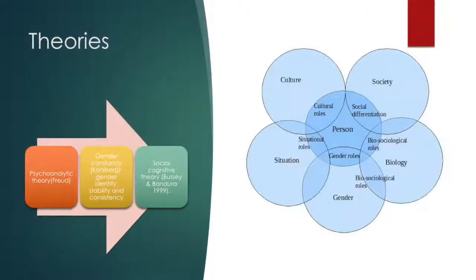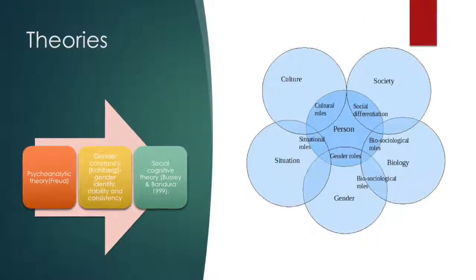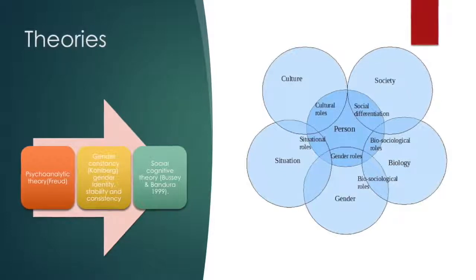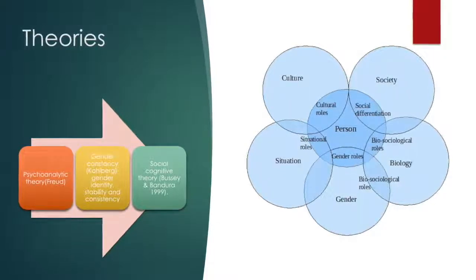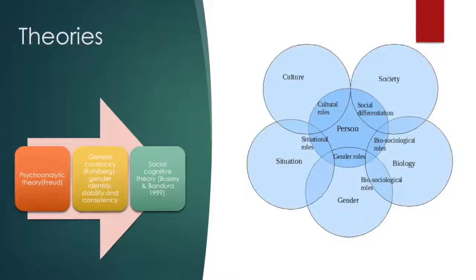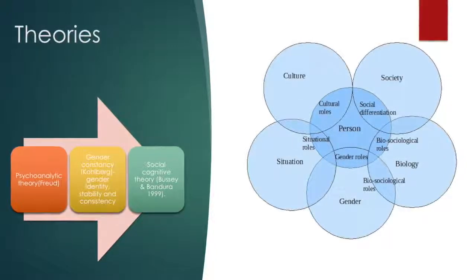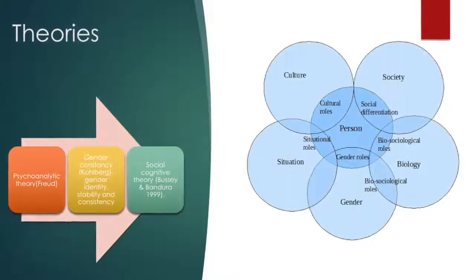Gender identity is one's gendered self-categorization or representation that becomes the way they exhibit their gendered social self. According to psychoanalytic theory proposed by Freud, individuals identify with their same-sex parent, forming the Oedipus complex in boys and Electra complex in girls. Kohlberg, on the other hand, developed gender constancy as the idea that individual sex is a permanent attribute tied to underlying biological properties, and does not depend on surface characteristics like clothing, style, preference for activity, or hairline, etc.